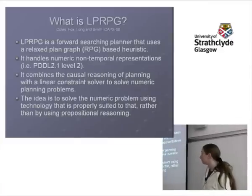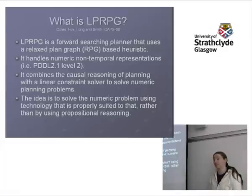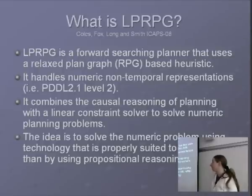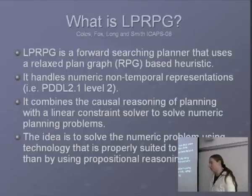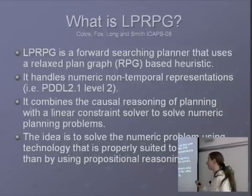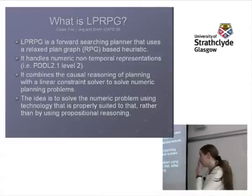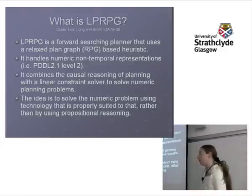So a little bit about it: it's a forward-chaining planner — think FF — using an RPG-based heuristic. We're only handling PDDL level 2, so we can handle numeric problems but we can't handle temporal problems. There are some complex reasons why temporal problems are quite difficult to combine into this framework. The key feature is we have causal reasoning using the relaxed planning graph heuristic, and then we use linear programming to solve the numeric part of the planning problem.